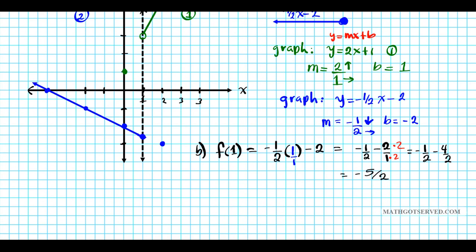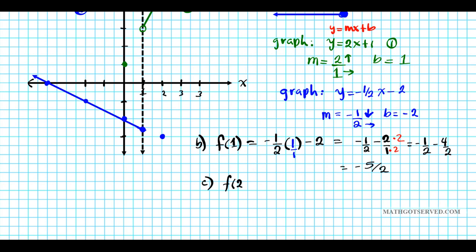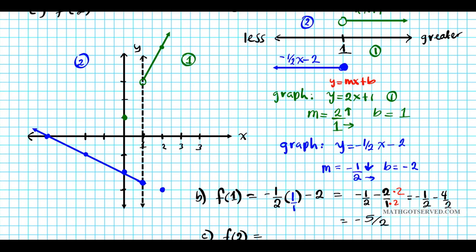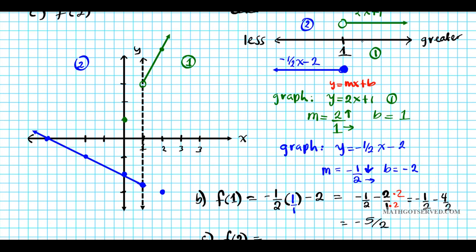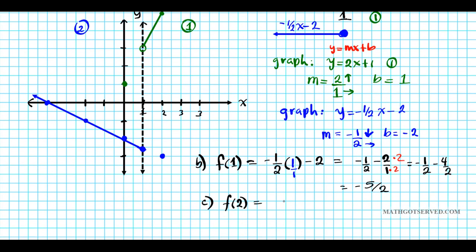For part C, we find f(2). Since 2 is greater than 1, we use the first function 2x plus 1. Plugging in 2: f(2) equals 2 times 2 plus 1, which is 4 plus 1, which equals 5.